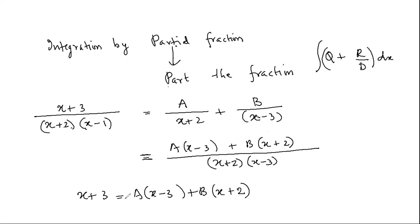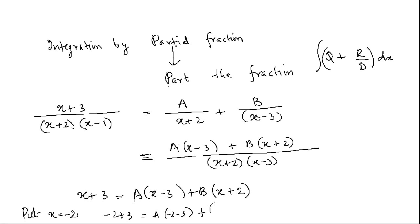Left-hand side is x + 3; right-hand side is A times (x − 3) and B times (x + 2). Since left and right are equal for all values of x, I'm going to put x = −2. When x = −2, the (x + 2) bracket becomes zero and I get A's value. So: −2 + 3 = A(−2 − 3) + B(0), giving 1 = A(−5), therefore A = −1/5.